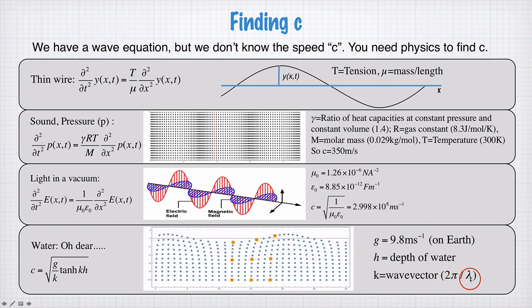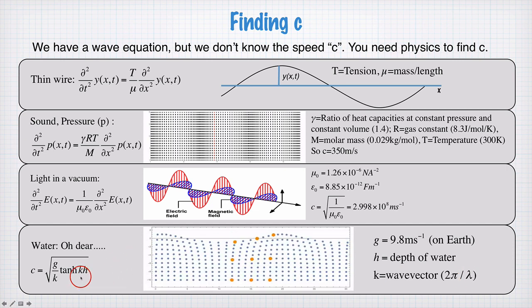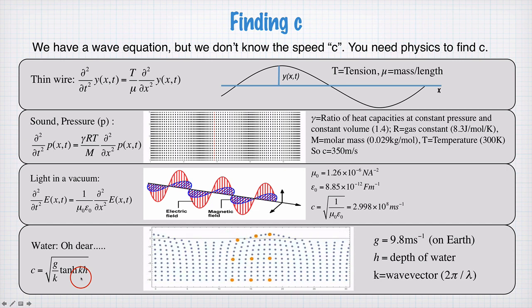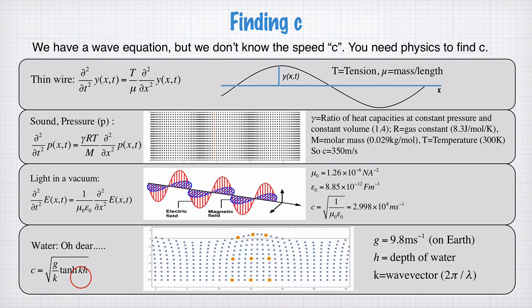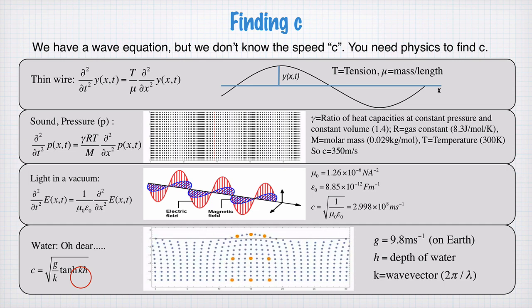So if we're dealing with a single frequency wave that has a particular wavelength and frequency, then we can write down the speed of the wave. But if we have some sort of mixture of two different waves with different wavelengths, then they'll travel at different speeds. And this is an example of dispersion. And water waves are strongly dispersive.